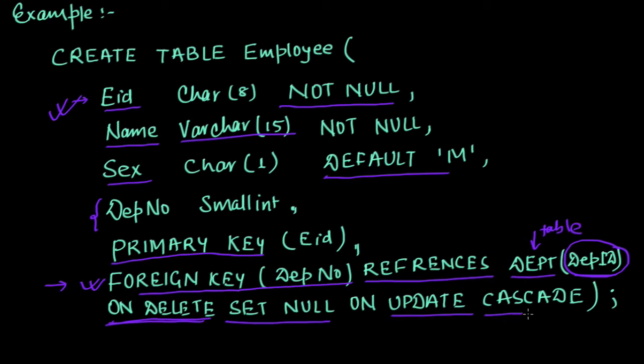So we have this Employee table, which we have just created, and we have Department. Let's say this is Department, and this is ID (Department ID, Dep ID) and this is Name.